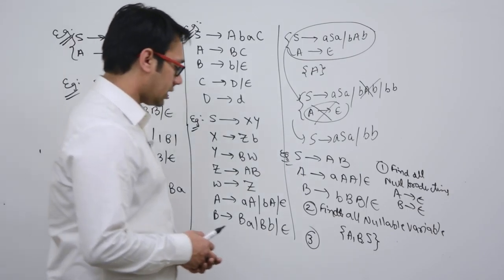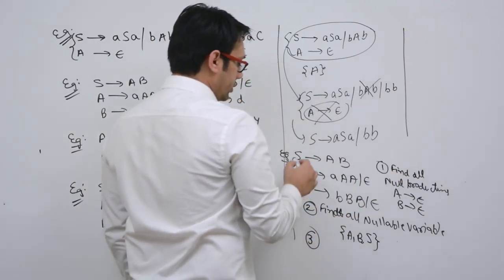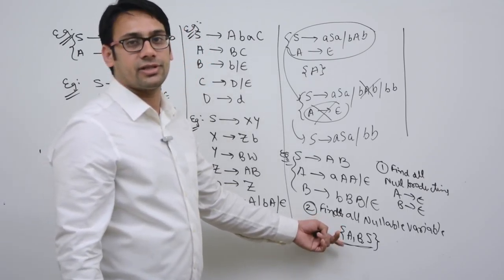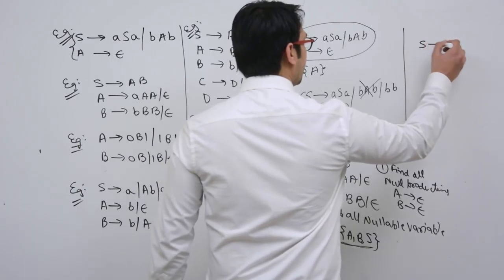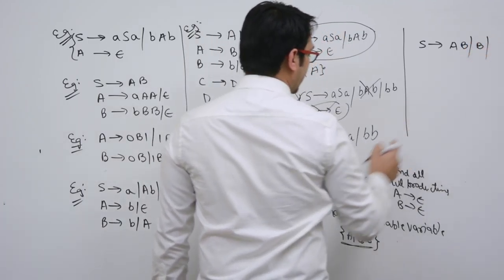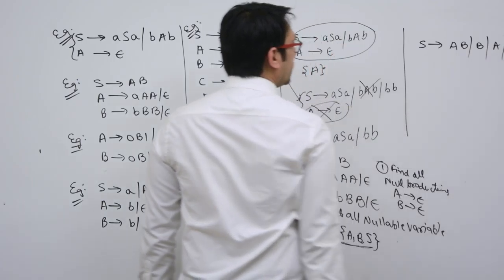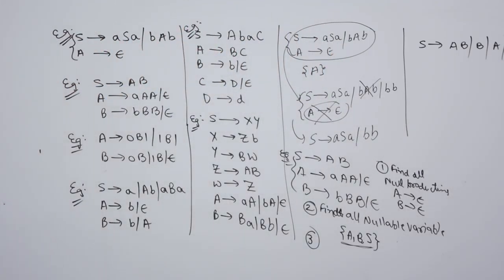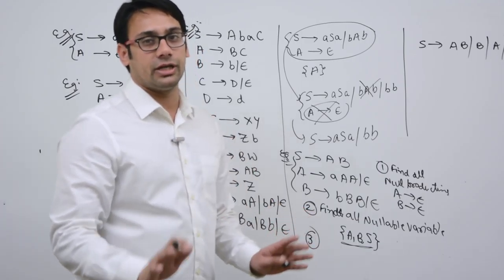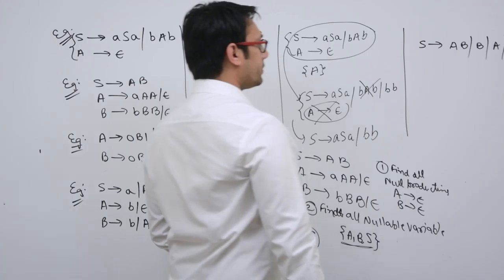Third, write all productions with and without the nullable variables. So S derives A B | B (without A) | A (without B). Since the start symbol is a nullable variable, the grammar must be generating epsilon.